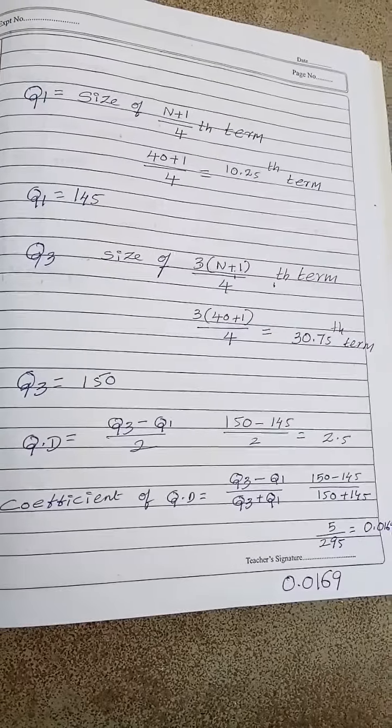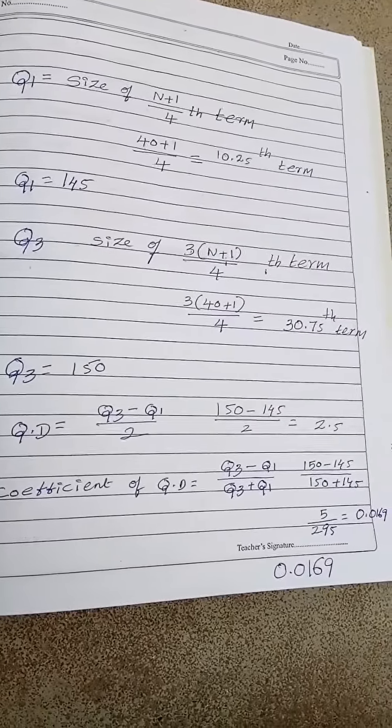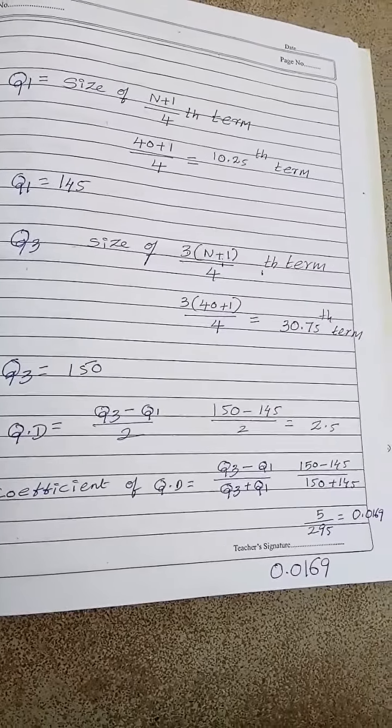Coefficient of quartile deviation is equal to Q3 minus Q1 by Q3 plus Q1. 150 minus 145 divided by 150 plus 145. Yeah, my dear students, so I got 0.0169.